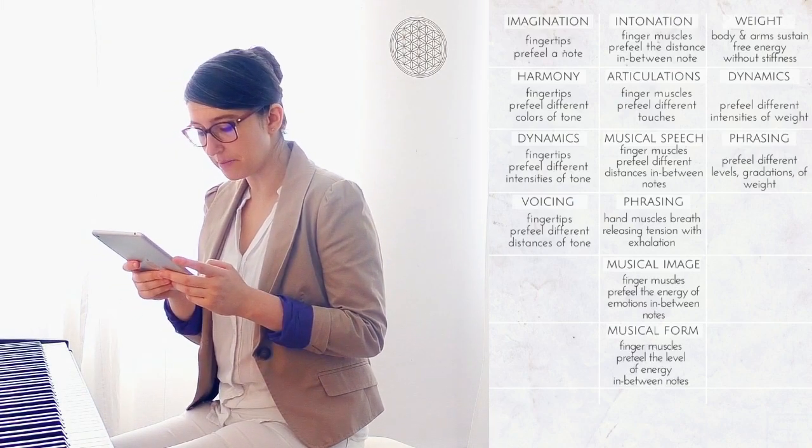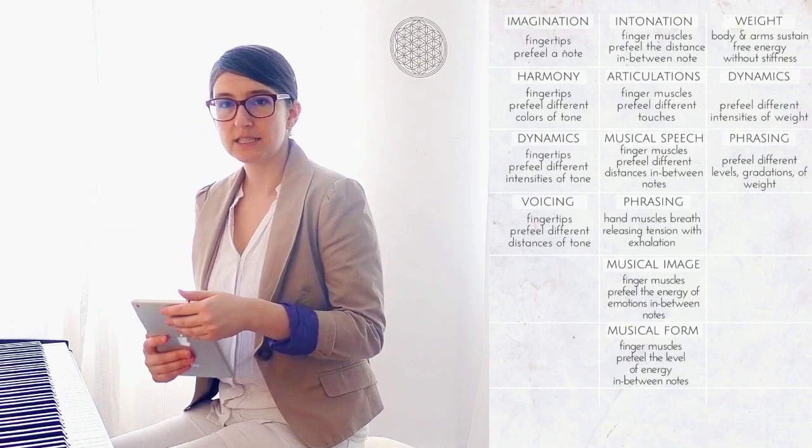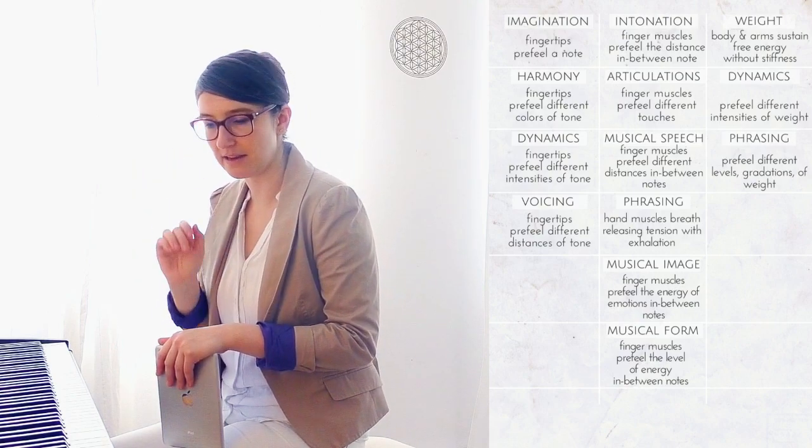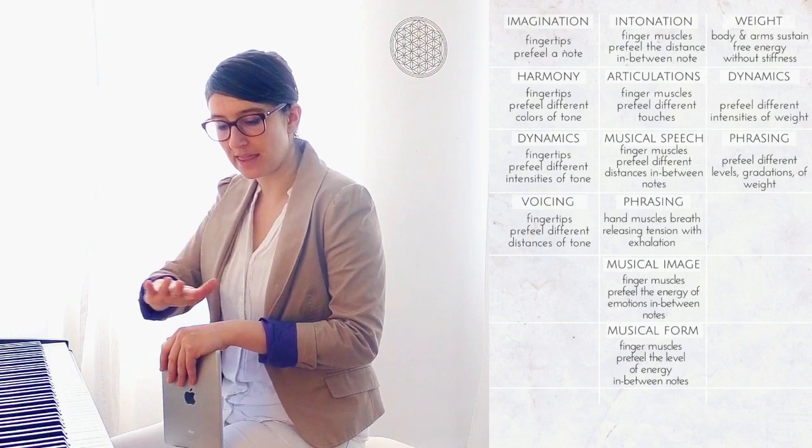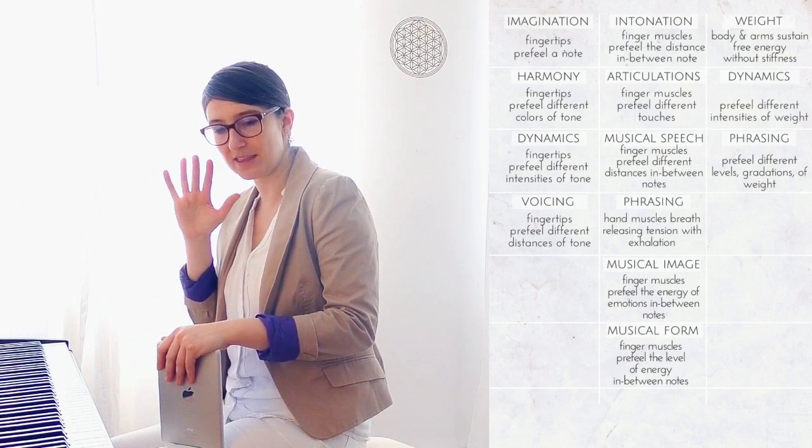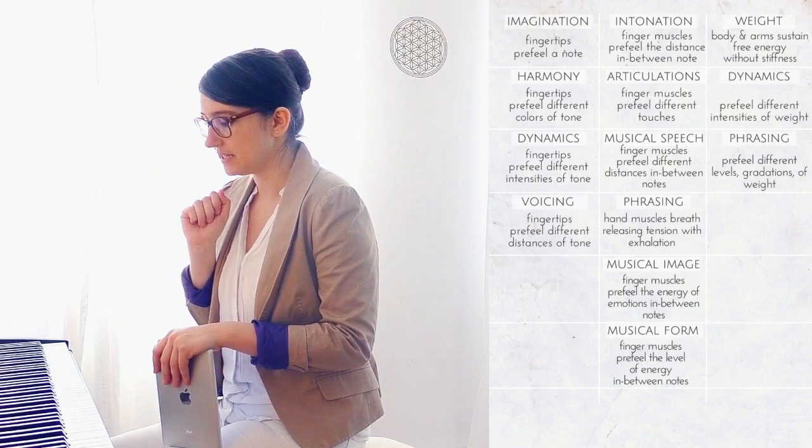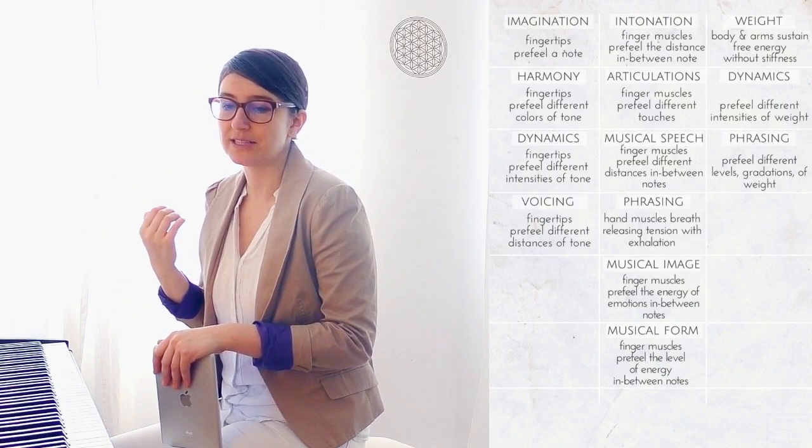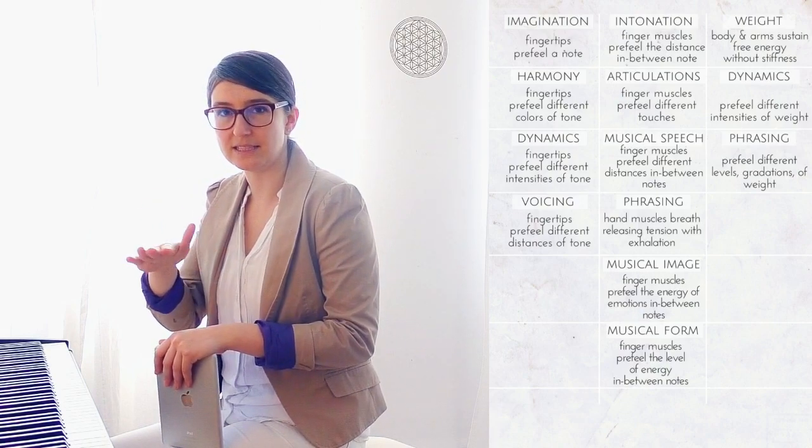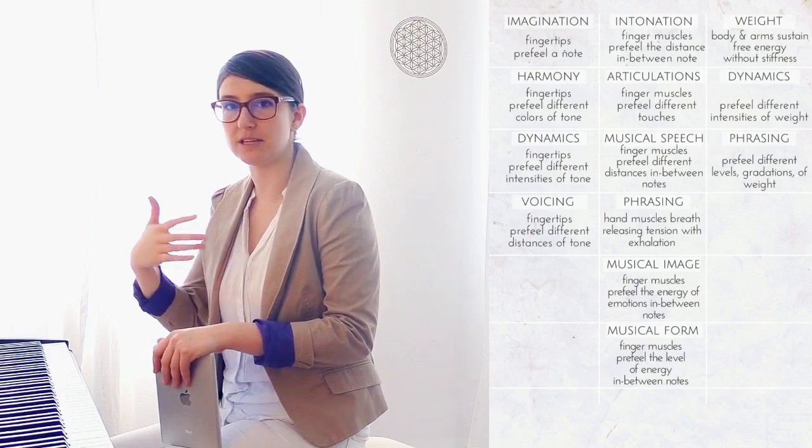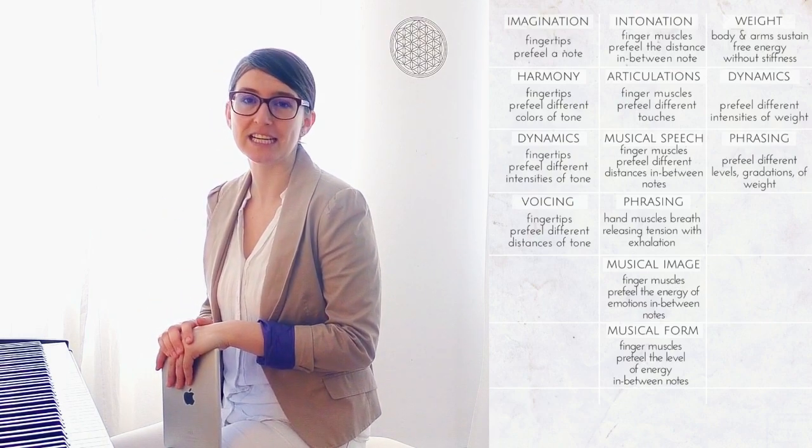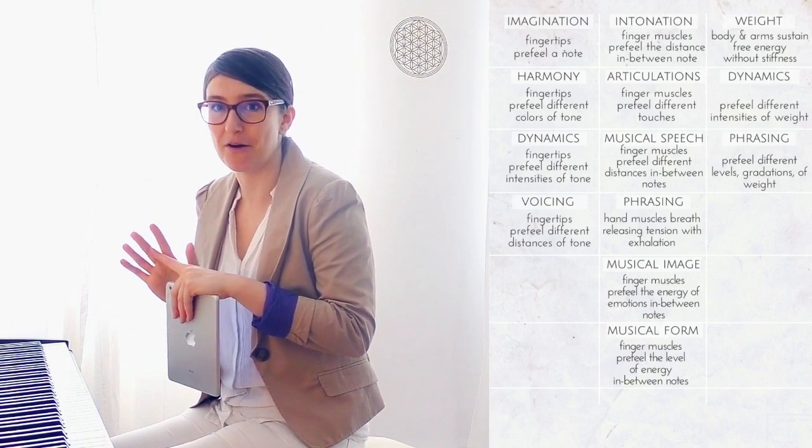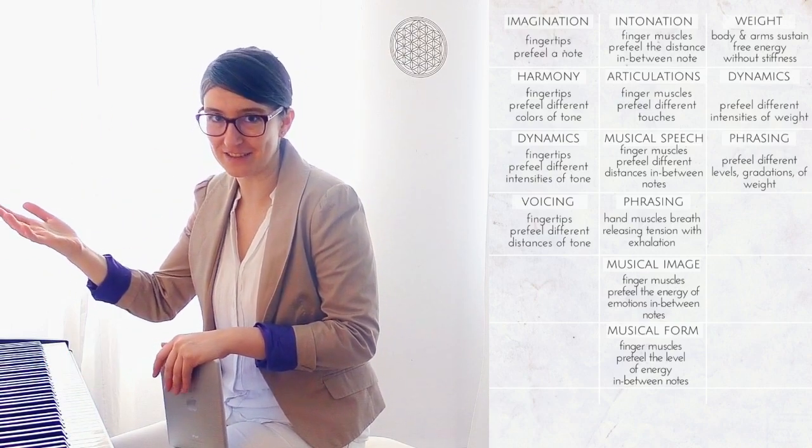Musical form helps finger muscles pre-fill the level of energy in between notes. So musical form works the same way as phrasing in terms of gradating this energy level. But now we look at the whole piece. So we look at the piece from a bigger perspective. And when we know where is the beginning of the story, where is the culmination, we naturally start to gradate this level of energy. So in the beginning, you would give quite very little energy through your intonation and that will affect finger muscles and the energy you will feel over here. And that's how you would convey your ideas through playing.